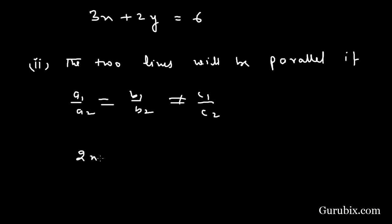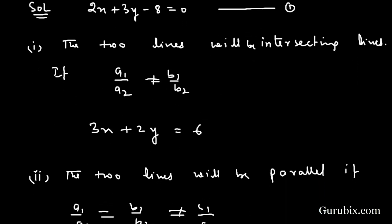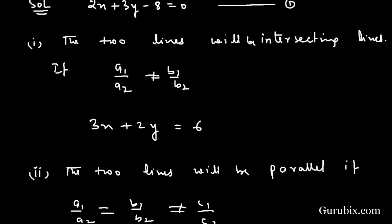Because the coefficient of x and y would be same but the constant term must be different, so here we have minus 6.